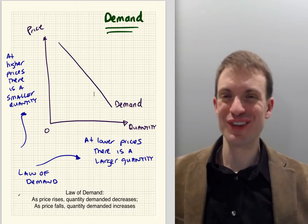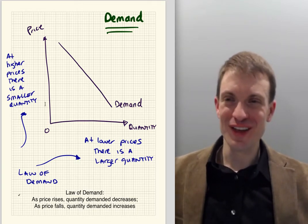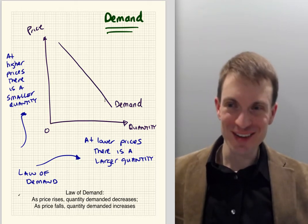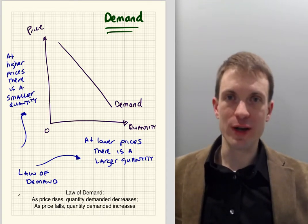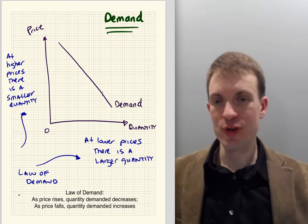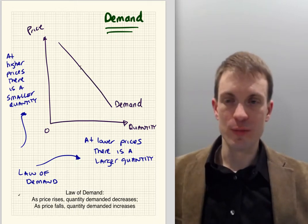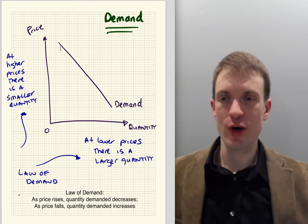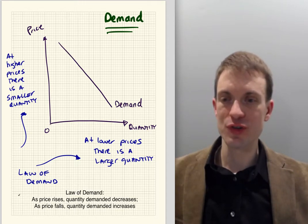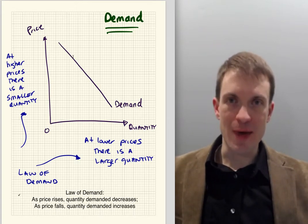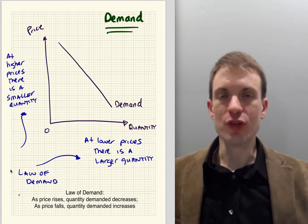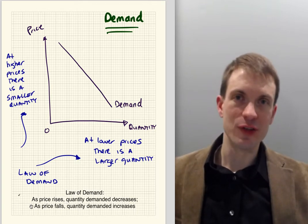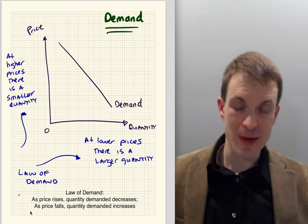Here's a demand curve — price on the vertical, quantity on the horizontal. At higher prices, as price rises, we get a smaller quantity demanded. So as you go up the demand curve, price is rising and quantity demanded is falling. Conversely, going down the demand curve, price is falling and quantity demanded is rising. At lower prices there's a larger quantity. This is what we call the law of demand: as price rises, quantity demanded decreases; as price falls, quantity demanded increases.